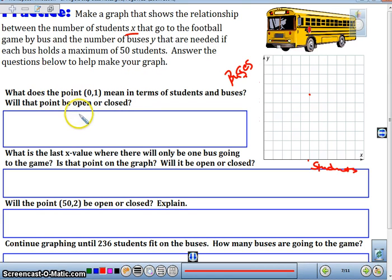So what does that point (0, 1), before we think making our graph, (0, 1) means in terms of students and buses. And will it be an open or closed graph when we think about that? And remember, x is our students. That's our students.